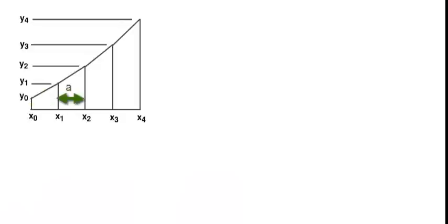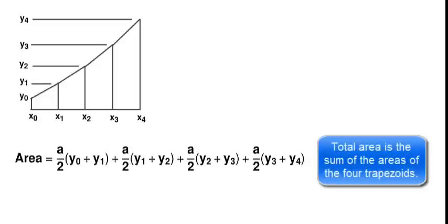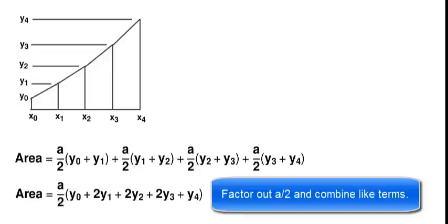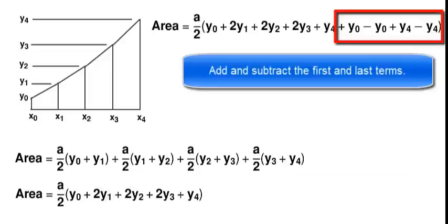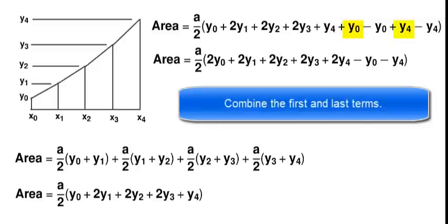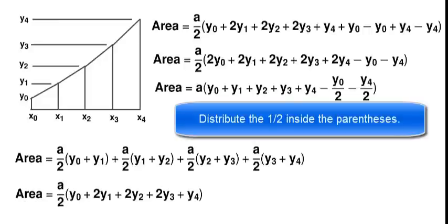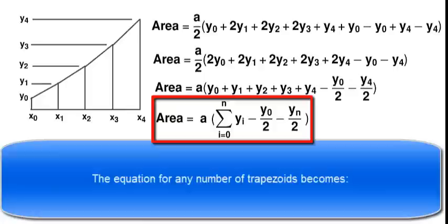A is the increment between all values of X. Total area is the sum of the areas of the four trapezoids. Factor out A over 2 and combine like terms. Add and subtract the first and last terms. Combine the first and last terms. Distribute one-half inside the parentheses. Then write the general equation for any number of trapezoids.